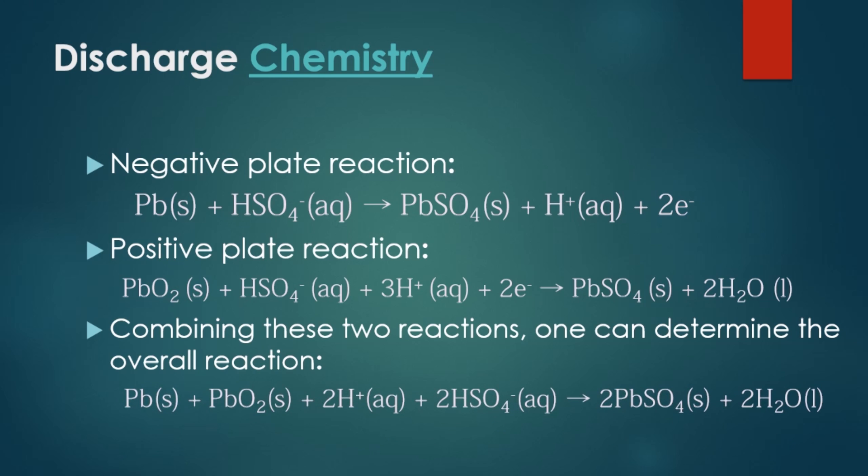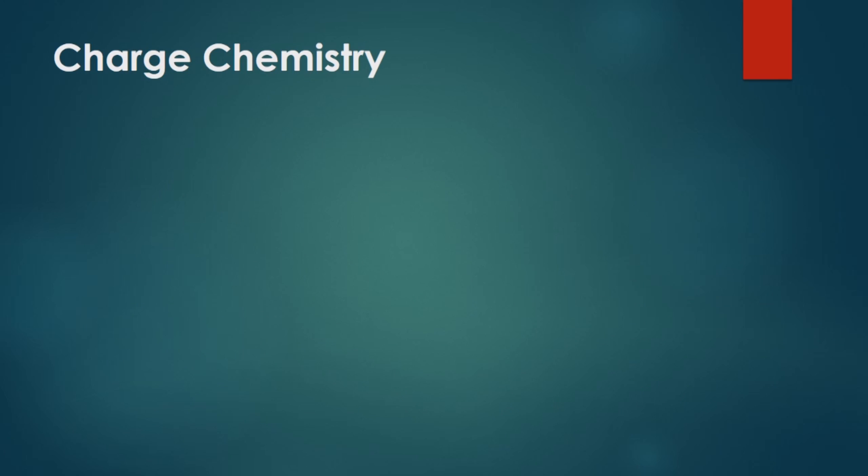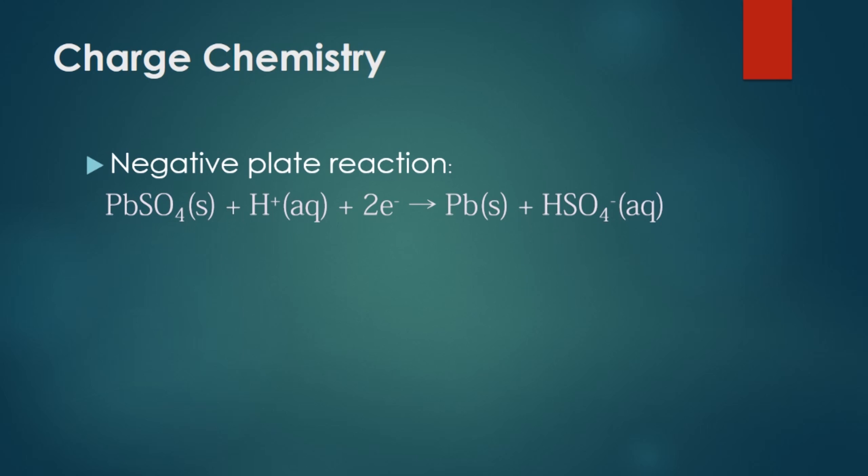So let's move on to the charge chemistry of the battery. In the charged state, we use an outside source EMF so the non-spontaneous reaction can proceed. Unlike the discharging process, the anode and cathode signs will be reversed. So the anode will have a plus sign and the cathode will have a negative sign. At the cathode, electrons are being pushed into the cathode from the EMF source.